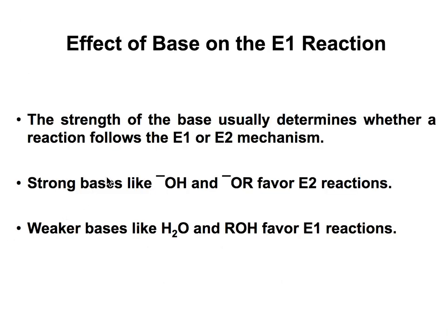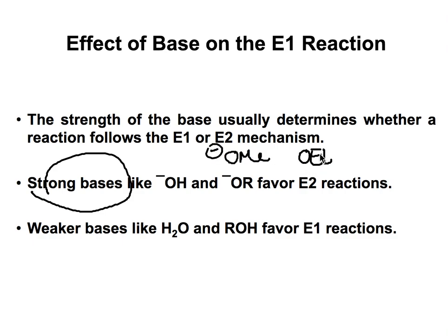The base helps us determine whether E1 or E2 occurs. Strong bases with negative charges — such as hydroxide, OMe, or OEt — will favor E2 reactions. Weaker bases such as water, methanol, or ethanol will favor E1 reactions, because they react slowly and give enough time for the carbocation to form.